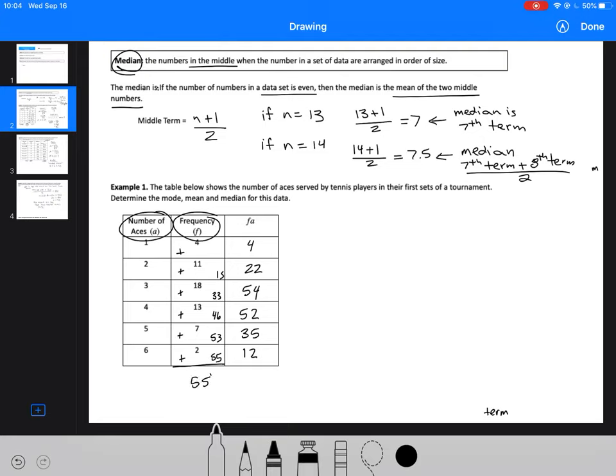So that means our total in our data set is 55. And then we need to add up our third column here too, which is going to give us 179. So this is going to give us the information we need to calculate the mean.